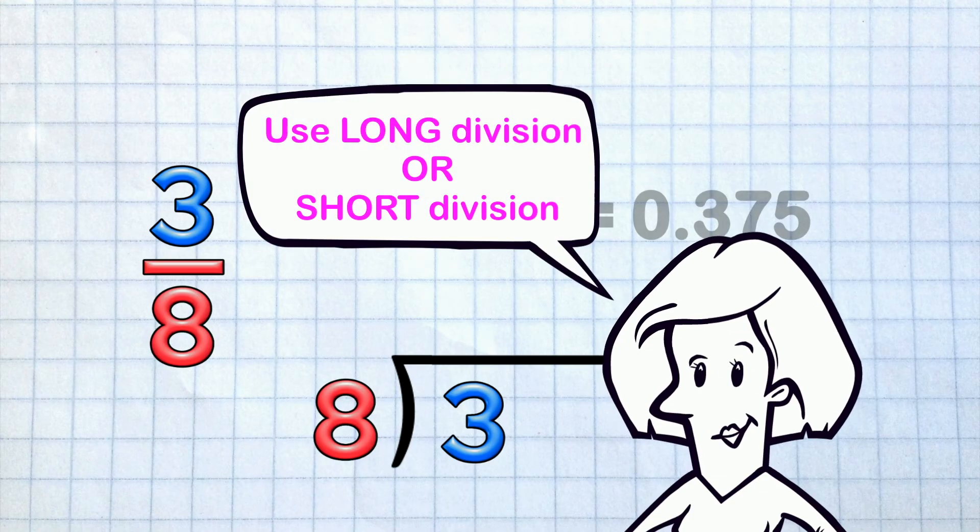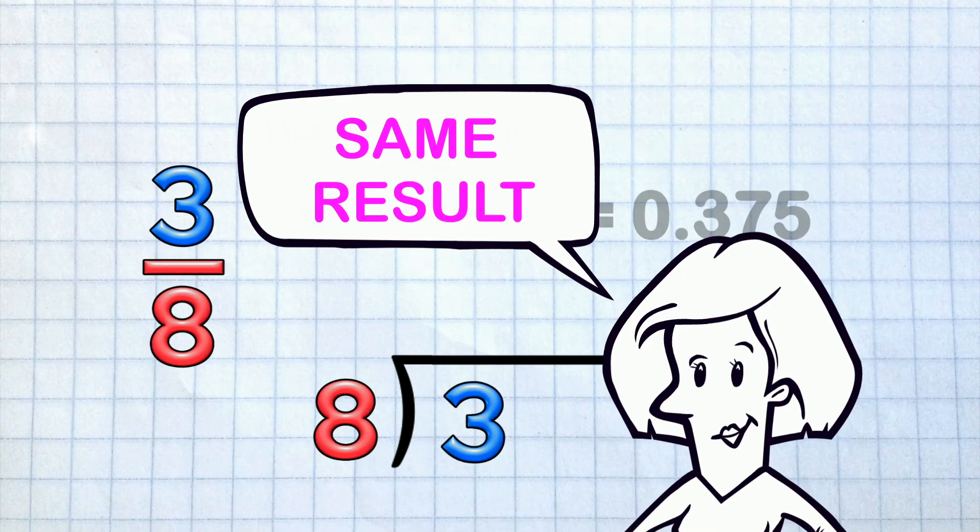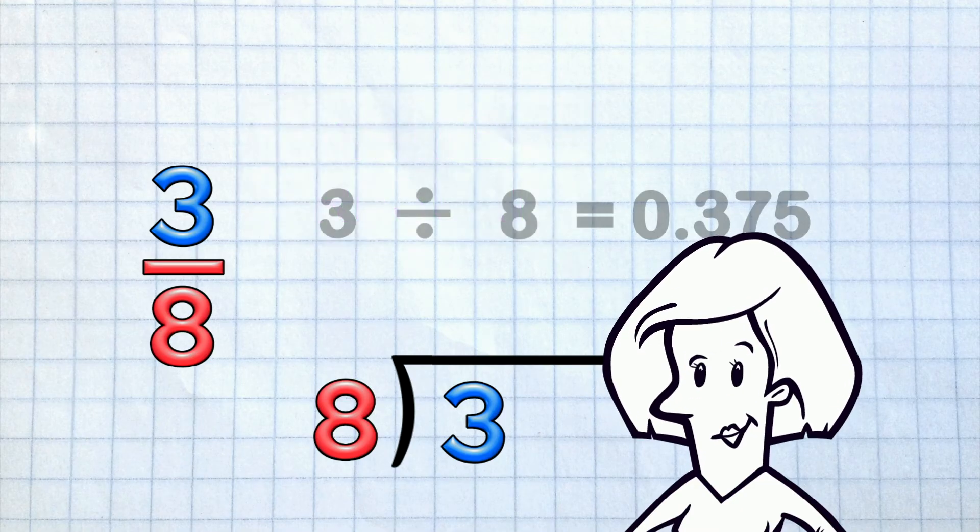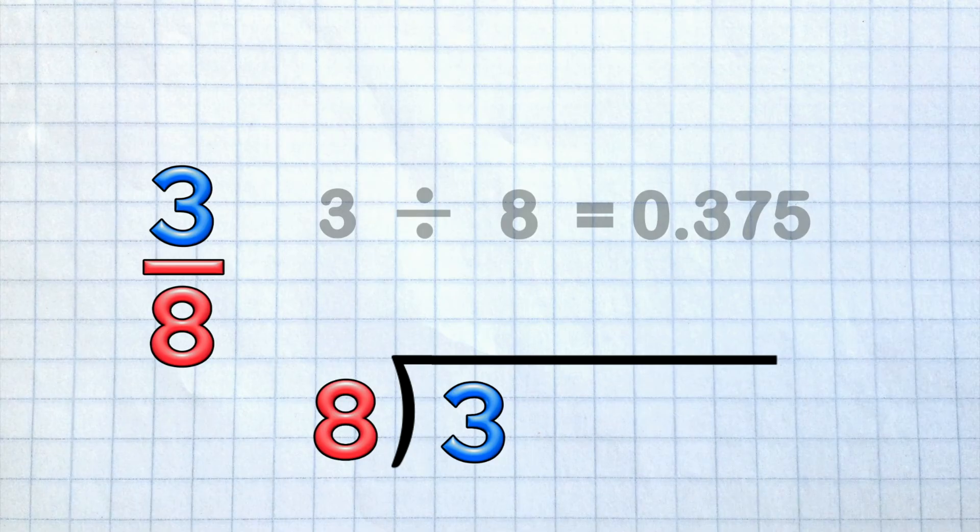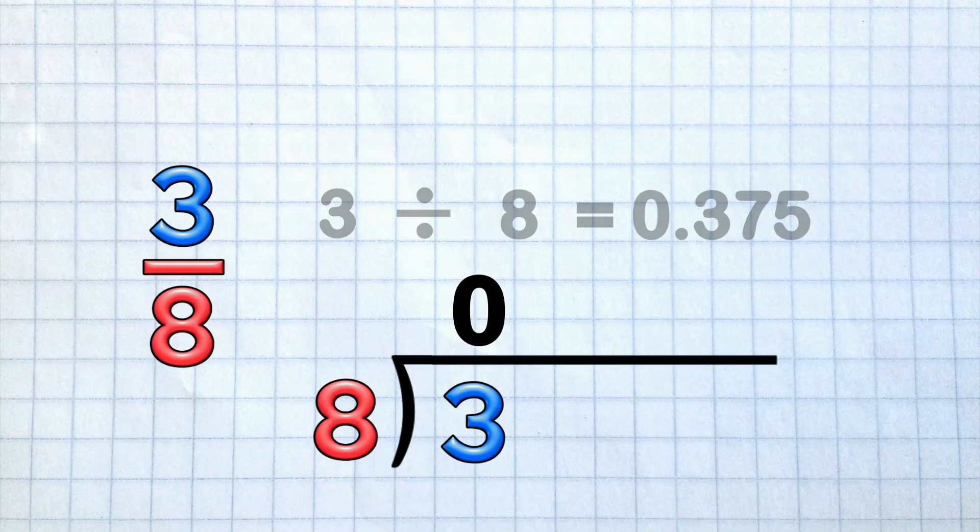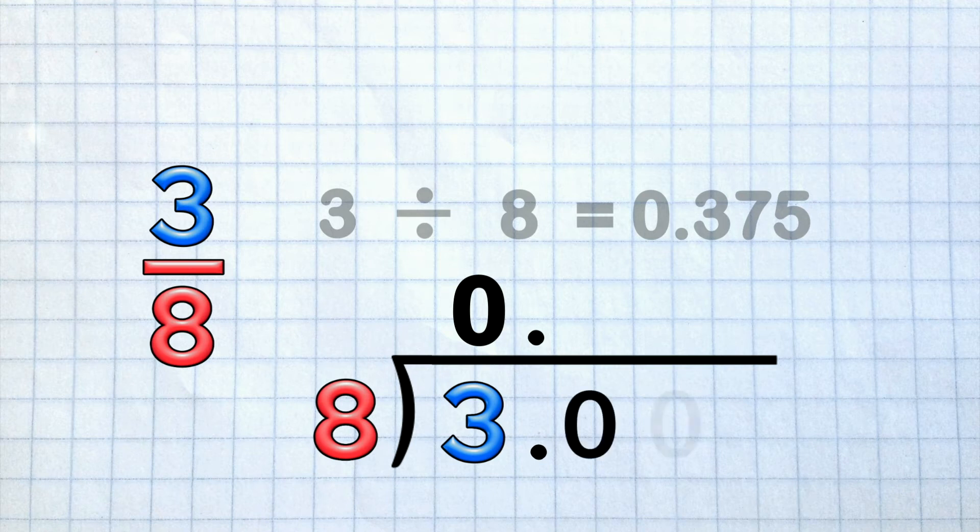You can use long division or short - your choice! Same result! I'm a short division person, so here we go. How many groups of 8 are there in 3? Obviously none! Put your zero, put a decimal point in the answer and in the problem, and some zeros so you've got something to work with.